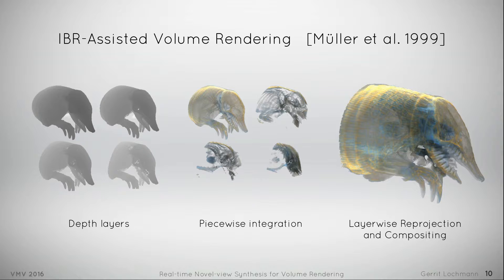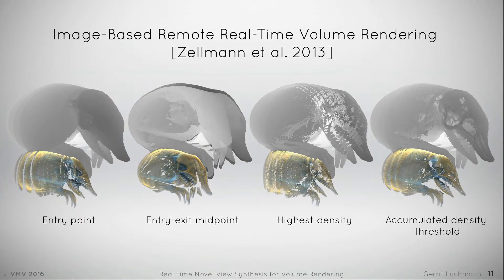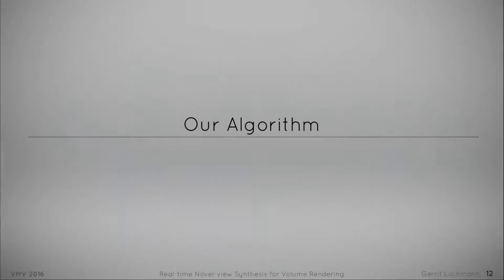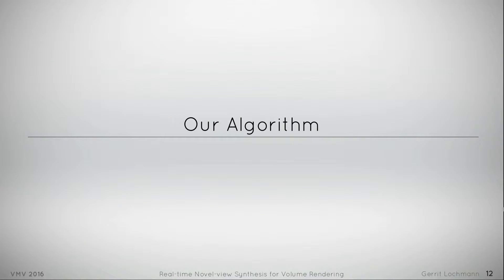Zalman et al. conducted experiments with various depth heuristics to condense a volume into a single RGB-Z image. The new image suffers from disocclusion and undersampling artifacts. And since all previous approaches are based on moving pixels, we try to go an analytical way.